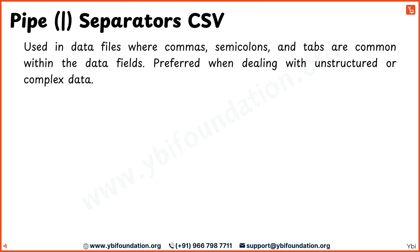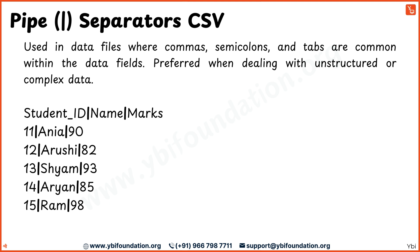In some cases, when the data contains commas, semicolons, or tabs, a different separator is needed. In these situations, the pipe symbol or vertical bar is often used. It's especially useful when dealing with unstructured or complex data. The pipe symbol separates the fields, ensuring clarity even if the data itself includes other common separators.